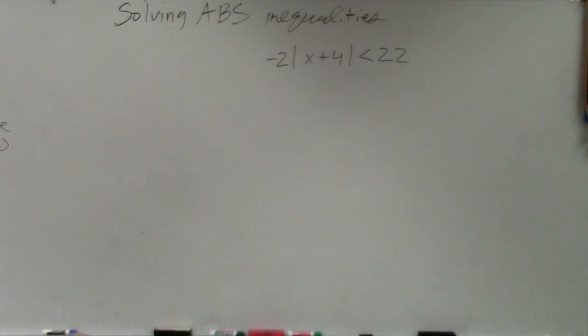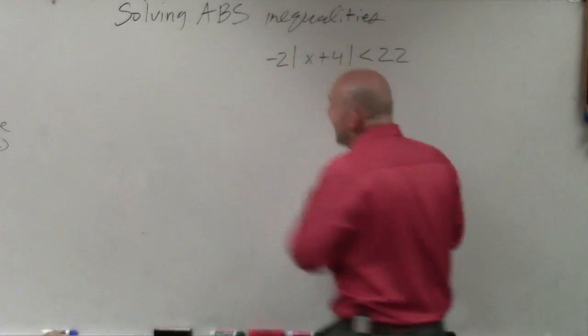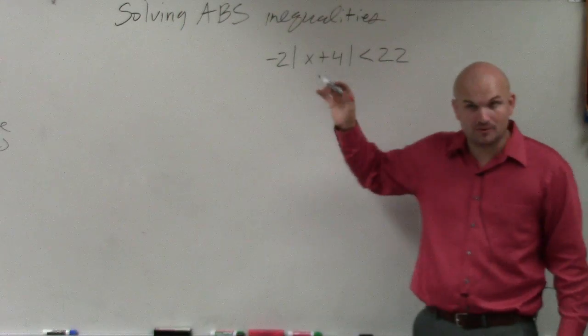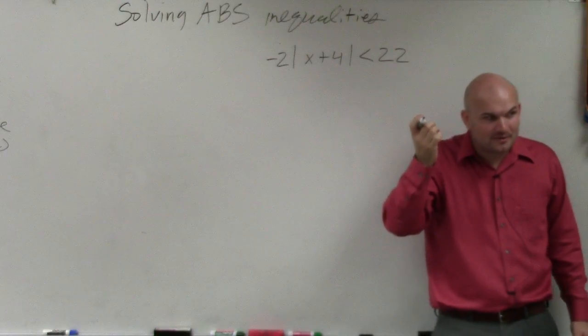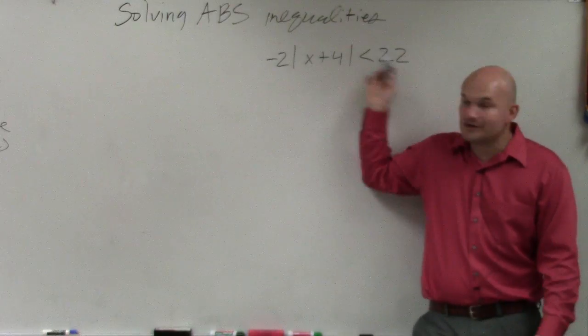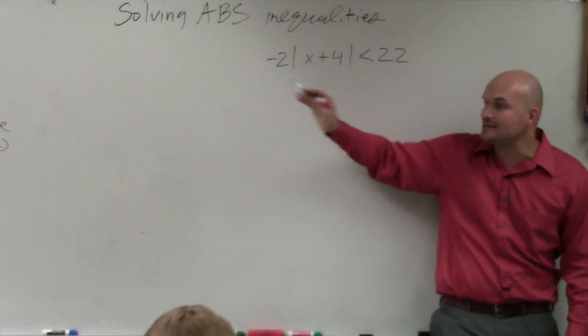So if we were to follow our process, for example number one, it says negative 2 times the absolute value of x plus 4 is less than 22. Please note on our process, the first thing we have to do is isolate the absolute value. These are not parentheses. We cannot distribute. We have to undo what's happening to the absolute value sign.